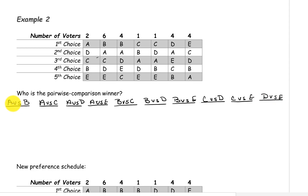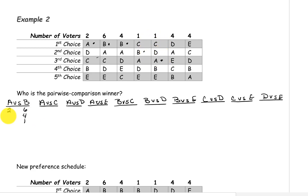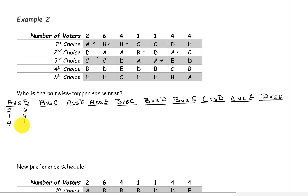We'll compare candidates A and B first. On the first two ballots, candidate A is above B, so A gets those two votes. B gets the next six because they're above A. On the next four, B is above A. B is above A on the next one. A is above B on the next one. On the next four, A is above B. And on the last four, B is above A. A has a total of seven votes and B has a total of 15 votes, so B is the winner here.